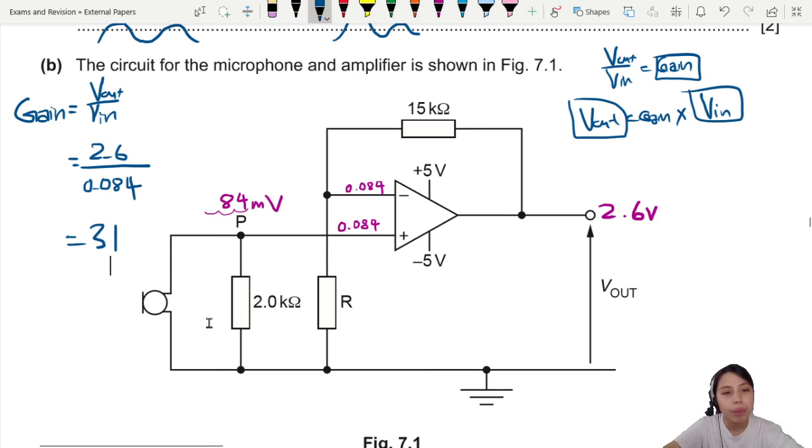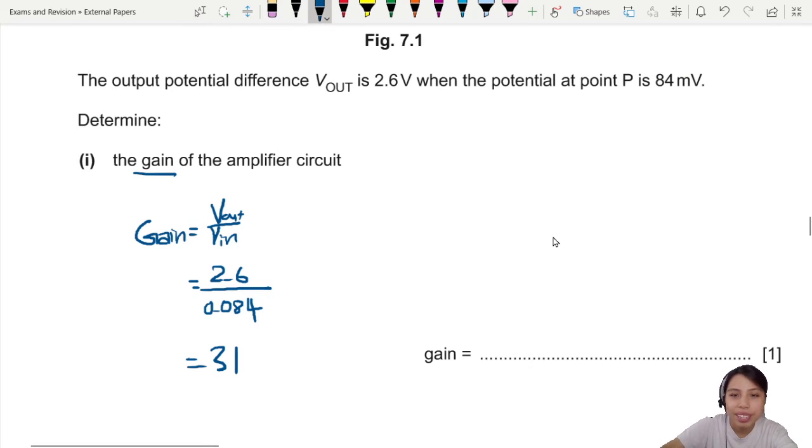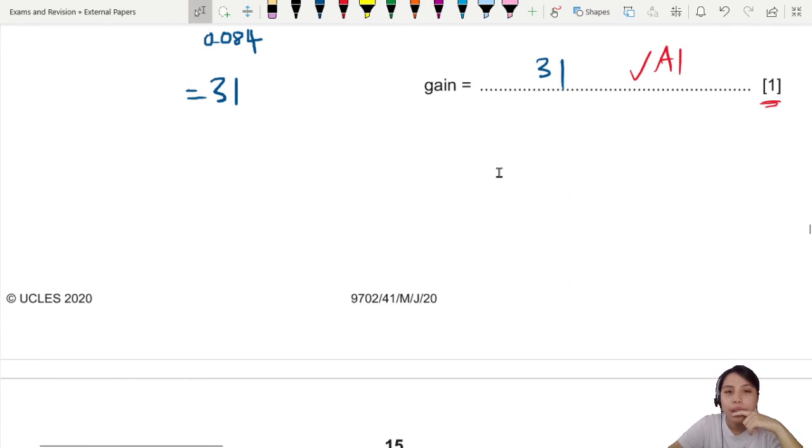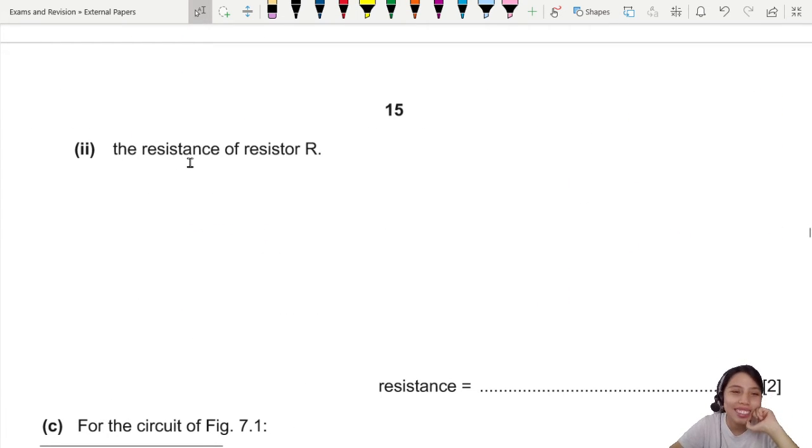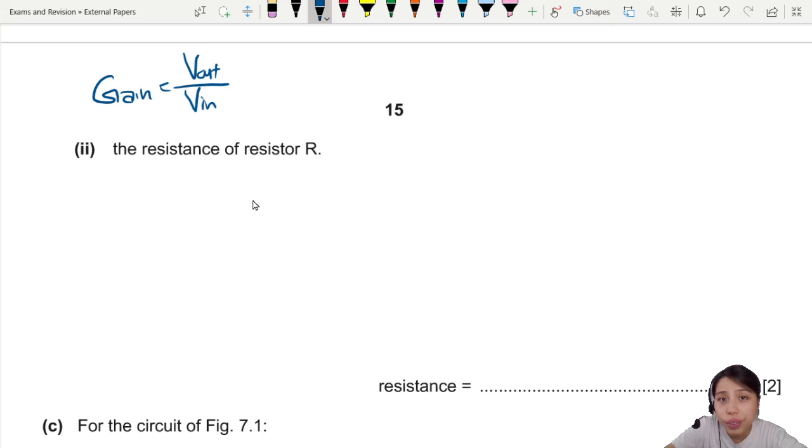So you take 2.6 divide by 0.084 and you will get about 31. Oh, that's quite a big, that's quite a loud gain. Maybe the microphone very soft, need to amplify quite a lot. So rewrite this equation down there. And yeah, your final answer, 31. One mark only? Okay, final answer. Don't overthink if you see it's one mark. It's probably one straightforward calculation. Now we go to the second part. Find the resistance of resistor R. Now remember I mentioned there's two equations for gain. Gain generally can be calculated by the ratio of V_out to V_in. How many times larger is V_out?